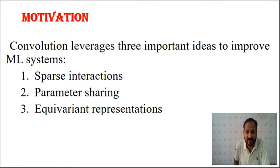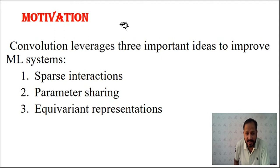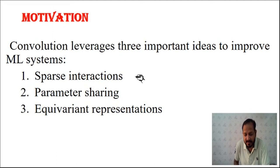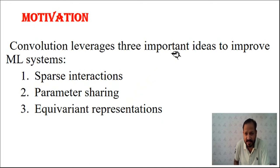Now we will see the motivation — what is the motivation behind using CNN for these applications. By using CNN and convolution operations, the efficiency of machine learning systems increases with fewer connections. There are three important ideas to improve the machine learning system: sparse interaction, parameter sharing, and equivariant representation.